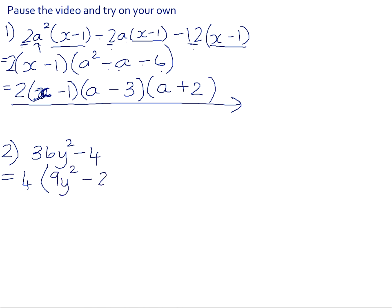That leaves you with 9y squared minus 1. And that is the difference of 2 squares. So it will factorise into 3y plus 1 and 3y minus 1.